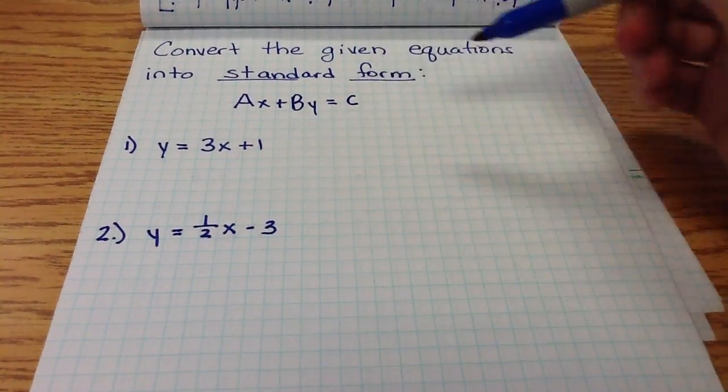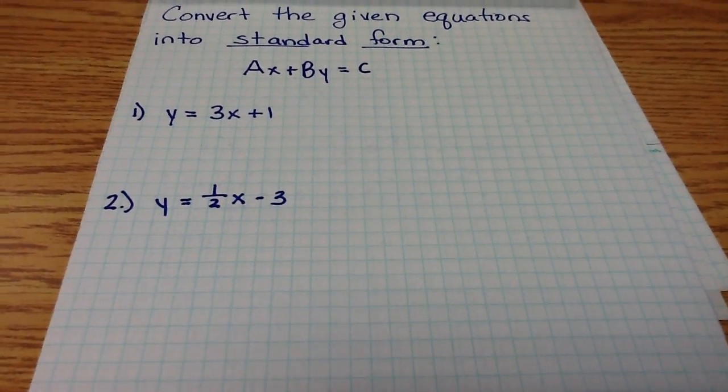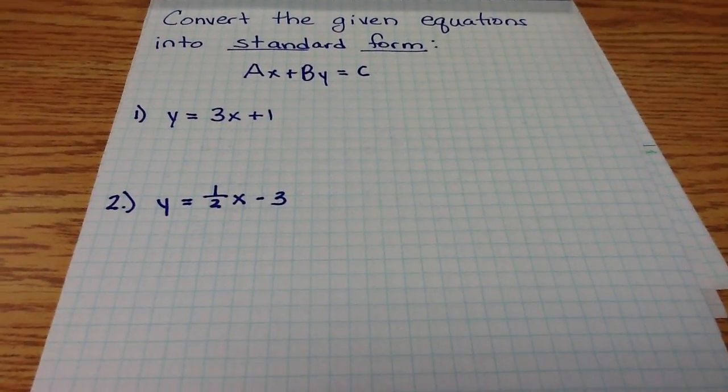Where A, B, and C are integers. They're not fractions. So A, B, and C must be integers.